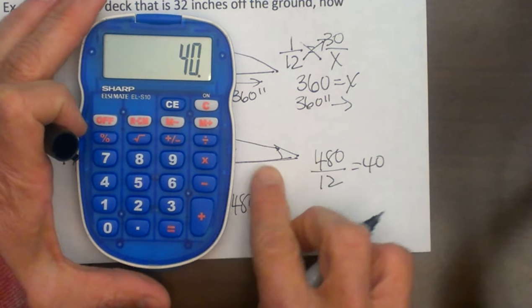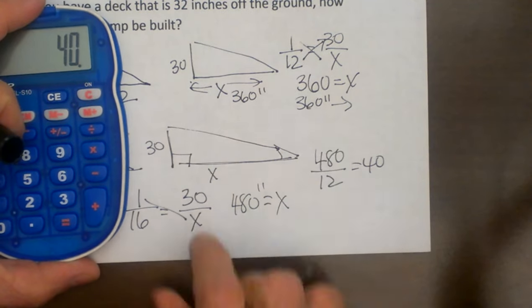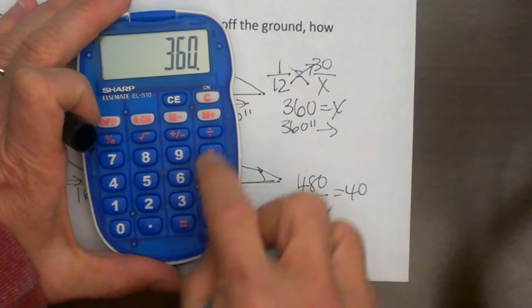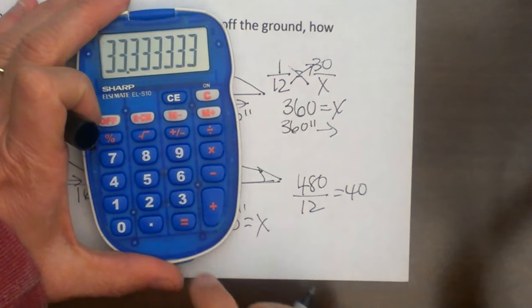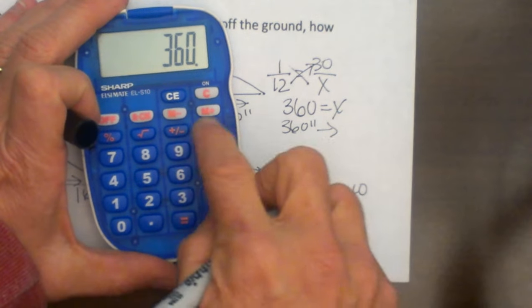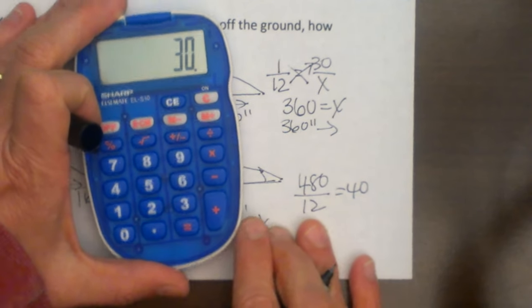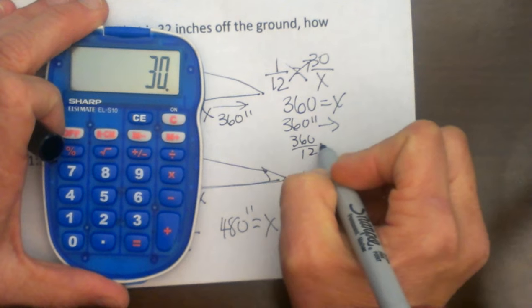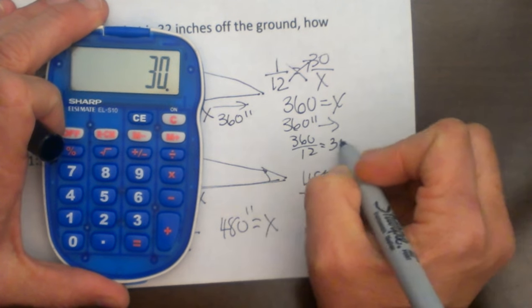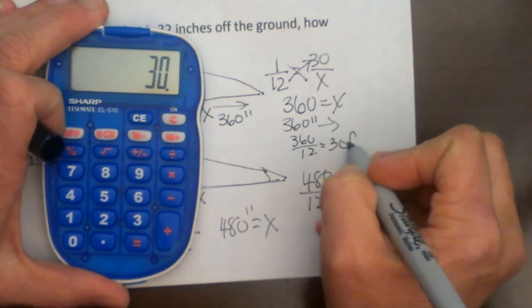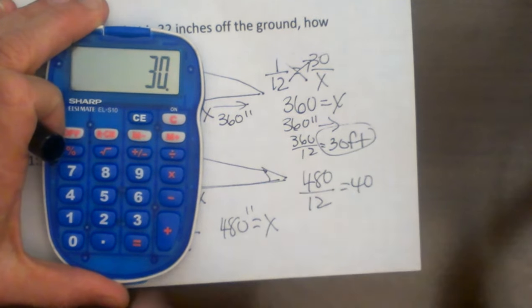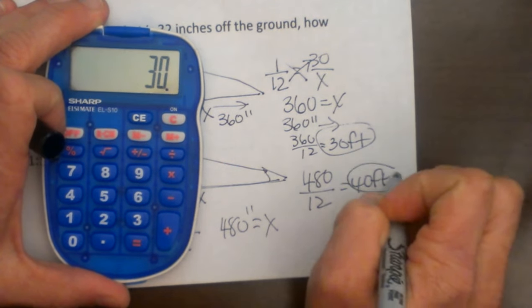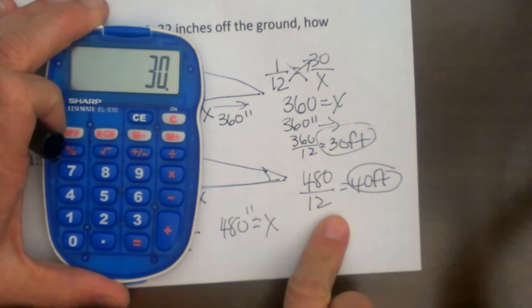So this ramp I have to have 40 feet to fit in the 1 to 16 ratio, versus the 360, which is 360 divided by 12, or 30 feet. So to convert it back to feet you just divide by 12. Let's say I have 32 feet. Well, I am going to have to go with the 1 to 12 ratio because I need 40 feet to build the 1 to 16 ratio.